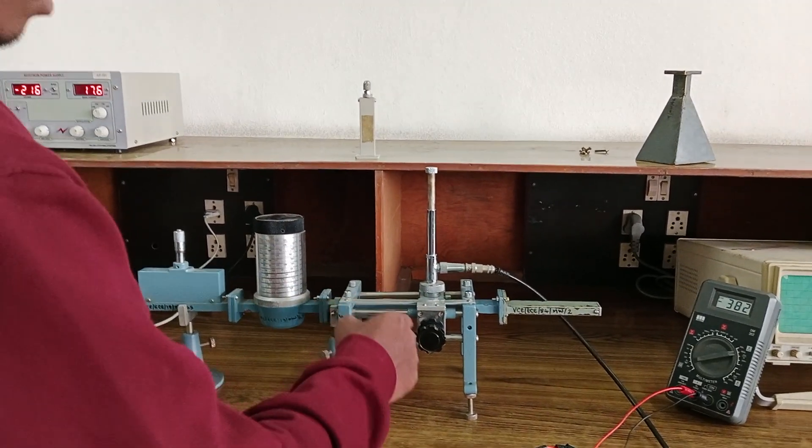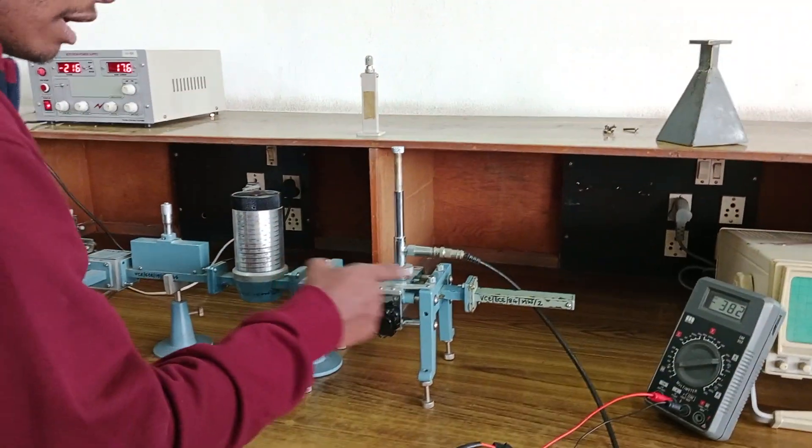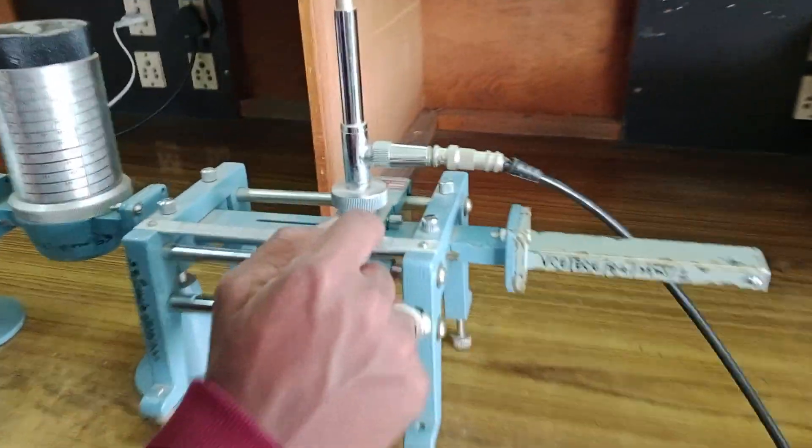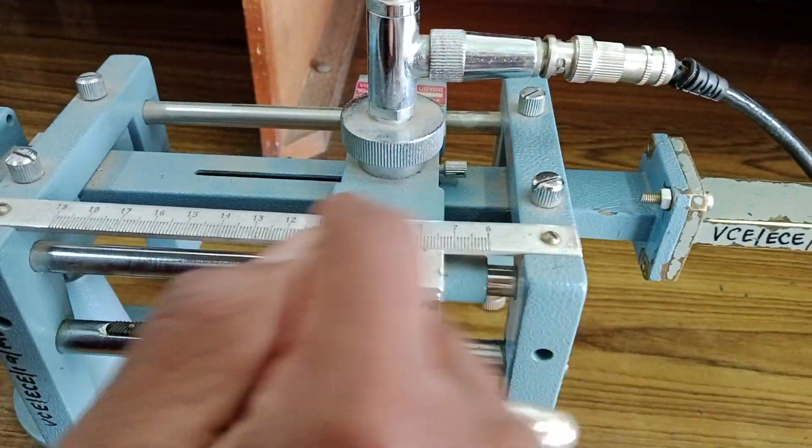Once you get the maximum current, here you have to vary the distance of the slotted waveguide. Here you have two scales. This is the fixed scale and this is the sliding scale.